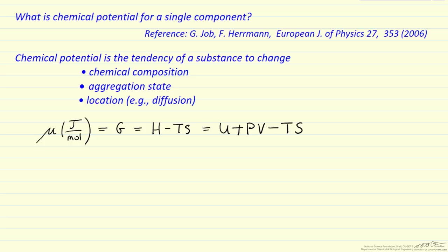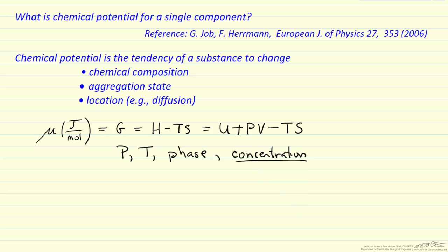Chemical potential can depend on pressure, temperature, and the phase. Within a given phase, it also depends on concentration. It's important to note that this concentration dependence is within a given phase.